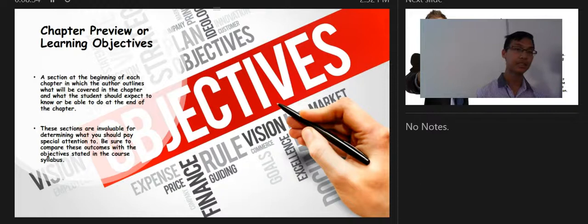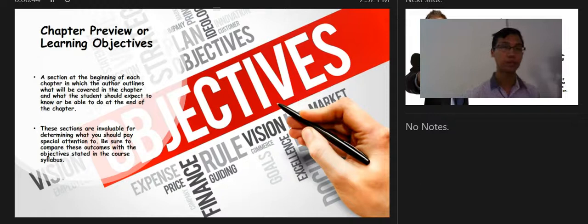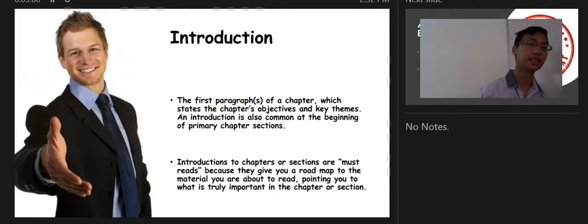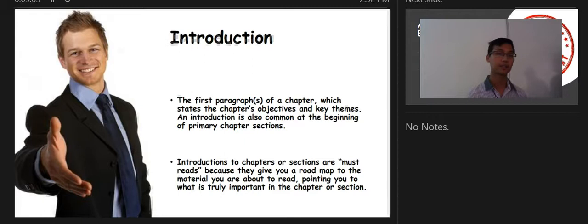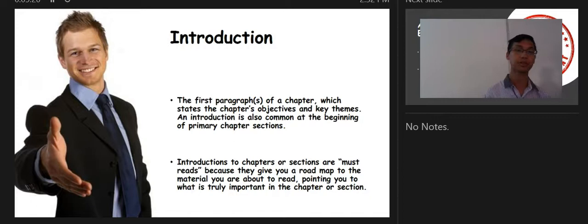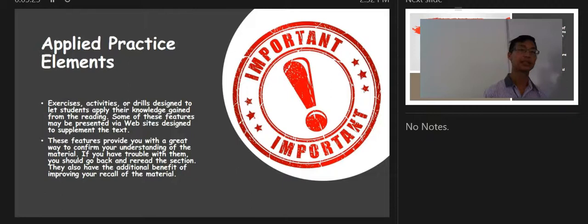The chapter preview or learning objectives section outlines what will be covered and what students should expect to know or be able to do by the end of the chapter. These are invaluable for determining what to pay special attention to — compare these outcomes with the objectives stated in the course syllabus. The introduction is the first paragraph of a chapter, stating its objectives and key themes — introductions are must-reads because they give you a roadmap to the material and point you to what is truly important.